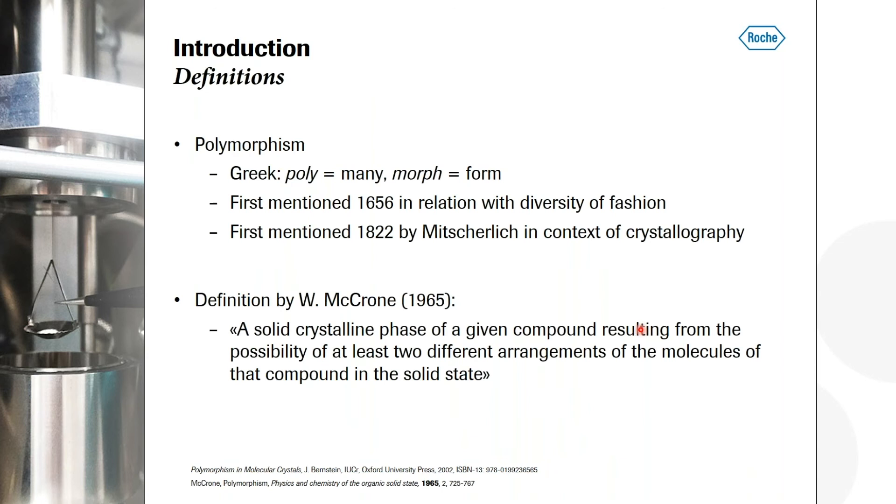Before we go on, I would like to share some definitions which are rather old. When we talk about polymorphs, we mean crystals, a solid crystalline phase of a given compound resulting from the possibility of at least two different arrangements of the molecules in that compound in the solid state. This is a definition by Walter McCrone back in 1965, but still a very valid definition of the polymorphism. If you go back, what means polymorphism? It comes from the Greek word poly, which means many, and morph, which means form, so that you have different forms. And it was first mentioned in a fashion, 1656, but then also in context of crystallography by Mitscherlich in 1822.